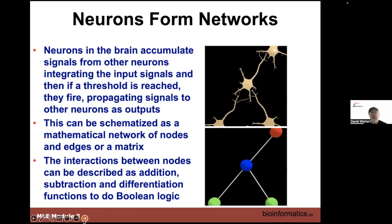They accumulate signals from other neurons, integrate the input signal, and if a threshold is reached, they fire, which propagates signals to other neurons. Since the 1940s, people have realized you can schematize this as a mathematical network of nodes and edges — just like the decision trees — or as a matrix with values or tables. The interactions between these nodes can perform addition and subtraction, differentiation, and Boolean logic.